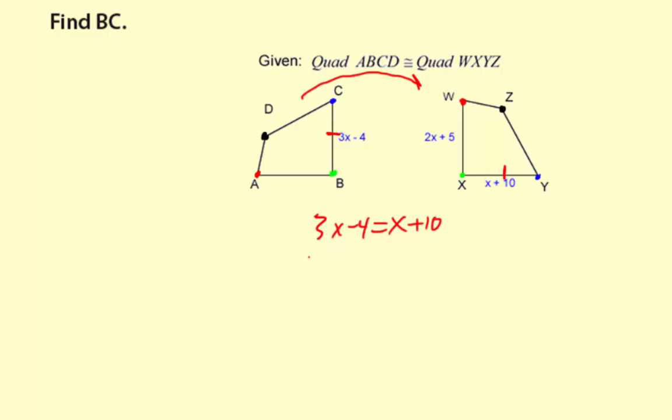So, now I just need to solve. I'm going to subtract X from both sides first. That's going to give me 2X minus 4 equals 10. Then add 4. 2X equals 14. Then divide by 2. And X equals 14 divided by 2, which is 7.